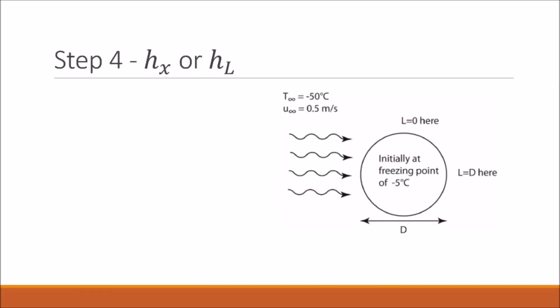In step 4 we determine whether we need to find Hx or Hl. Hx gives you the heat transfer coefficient at a certain distance from the zero point — the point at which the flow first contacts the edge of the paddy — whereas Hl gives you an average heat transfer coefficient over the characteristic length of the paddy. Hl is more appropriate here because we're just concerned with finding a heat transfer coefficient to determine freezing time.